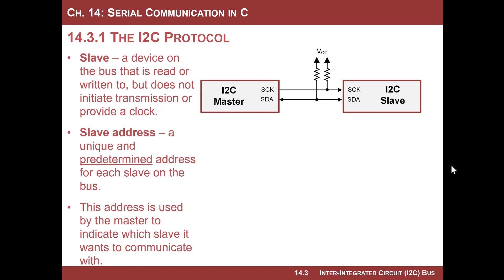When you find an I2C device that behaves as a slave, you look in the data sheet and it'll have an address — for example, 'my address is 82.' Some I2C slave devices have part of the address inside the chip, and you can provide the remaining bits using pull-up or pull-down resistors external to the device. The key point is that it has a hard-coded slave address.